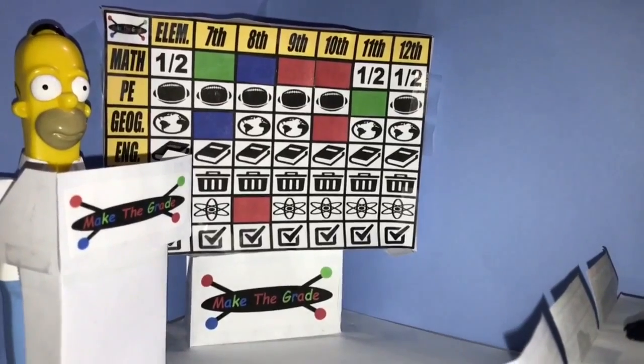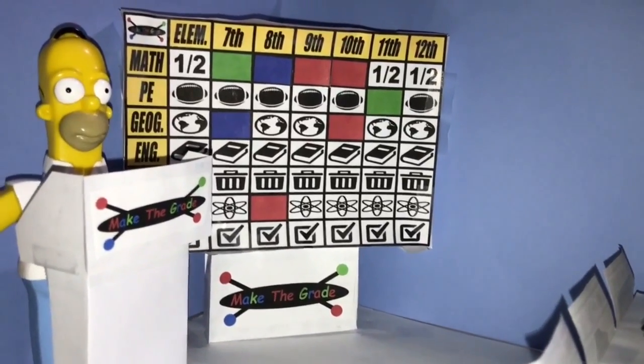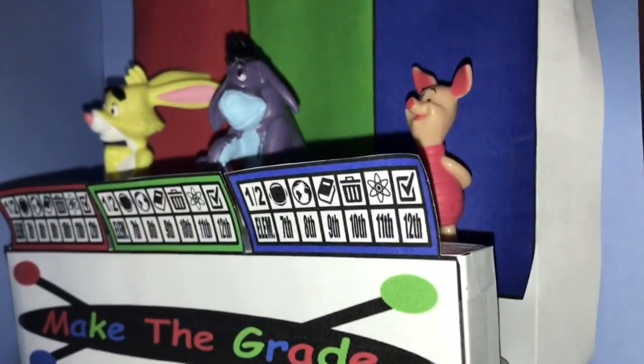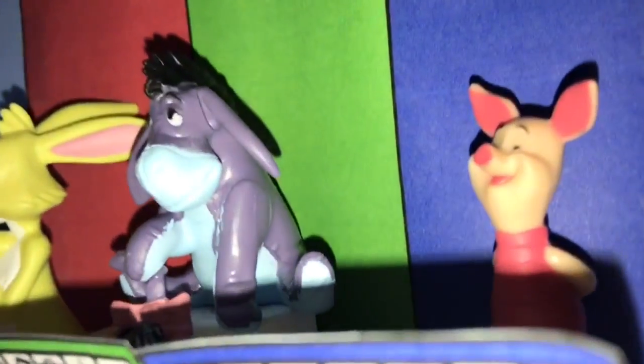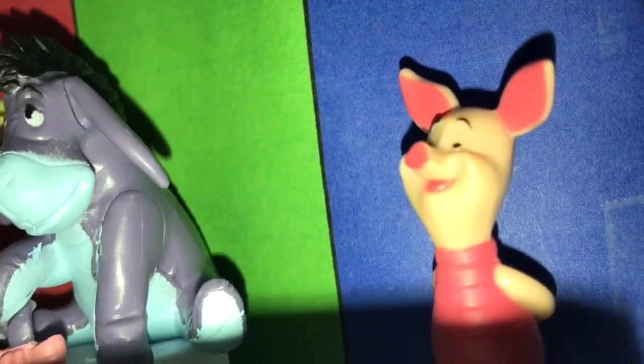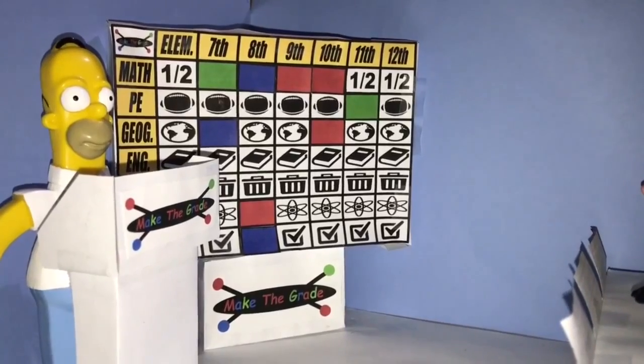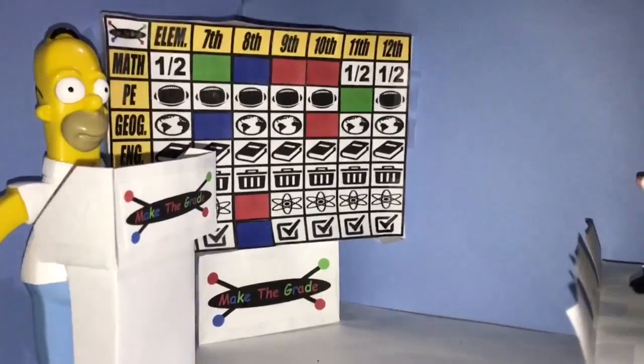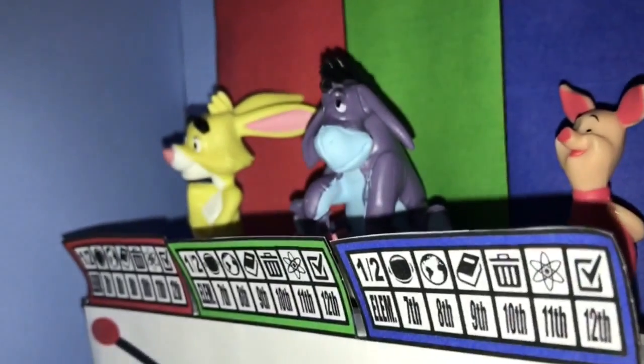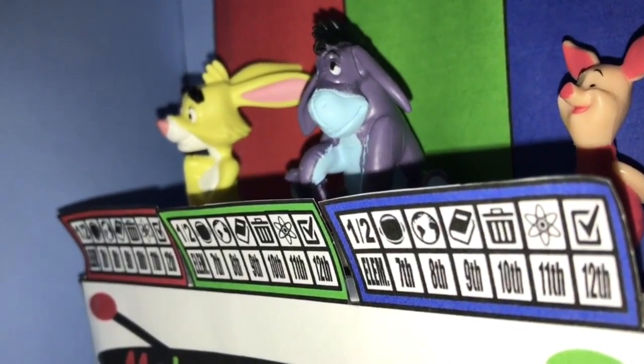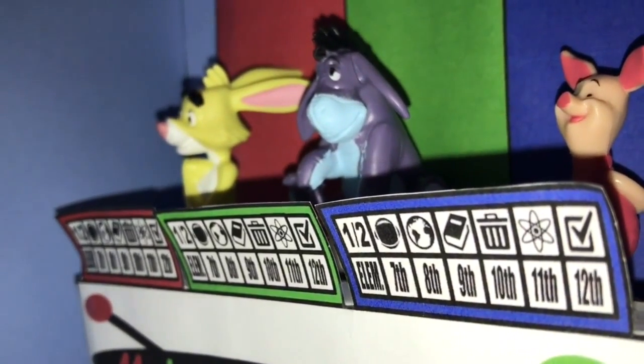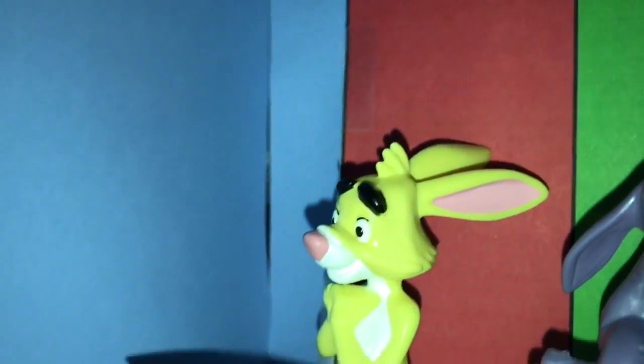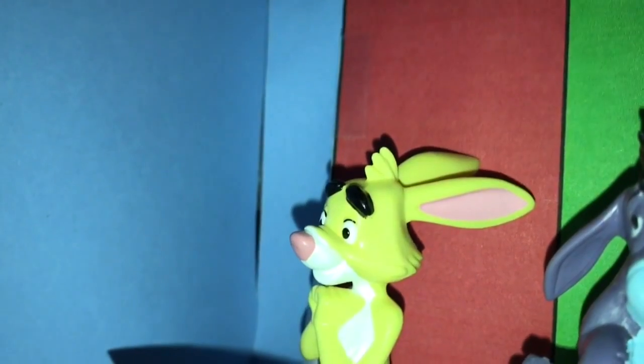TV for eighth grade. It's all about game shows. Here we go. Who was the original host of Let's Make a Deal? Piglet. Monty Hall. Correct. PE eighth grade. Michael Phelps won the most gold medals in what Olympic sport? Rabbit. Swimming. Swimming. Yeah. All right.